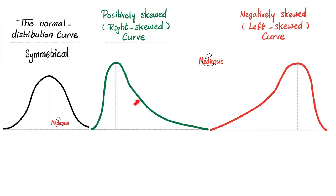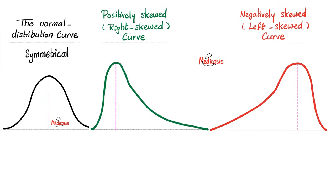But how about if the curve is skewed — skewed to the right when the tail points to the right, or skewed to the left when the tail points to the left. If it's positively skewed or right-skewed, then the mean will be greater than the median and greater than the mode, because the values increase as you go from left to right. So the mean is the highest in this case: mean is greater than median, greater than mode. But with a negatively skewed or left-skewed curve, it's the opposite — the mode is greater than the median, which is greater than the mean.